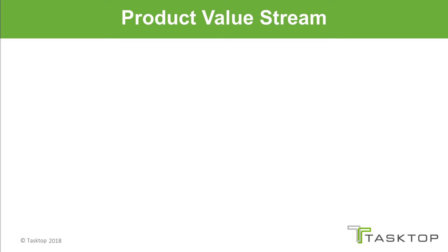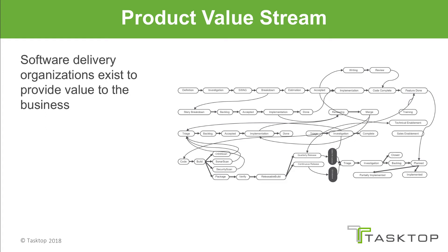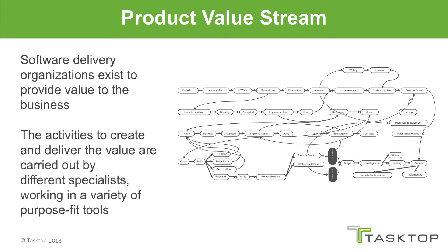Software delivery organizations exist to provide value to the business. In some cases the products you develop and maintain are used by external customers and sometimes they're used purely by internal customers. Either way, there are a lot of activities that must take place to deliver that value, and they are carried out by different specialists working in a variety of purpose-fit tools to maximize their productivity. That is called a product value stream.